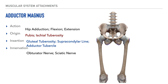First up we have the adductor magnus, and the primary action for this muscle is adduction of the hip, coupled with hip flexion and hip extension. Its origin is primarily on the pubis and on the ischial tuberosity, and we'll place our origin point here on our image. This muscle inserts on the gluteal tuberosity, the posterior aspect of the femur specifically on the supracondylar line, and on the adductor tubercle, and we'll mark those insertion points here.